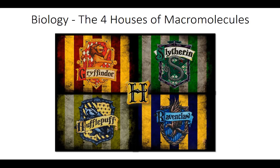Hey gang, it's Professor Roth and welcome to another episode of Biology One. Today we're going to be talking about the macromolecules of life — the four organic molecules. I tend to associate these with the four houses of Hogwarts: Gryffindor, Slytherin, Hufflepuff, and Ravenclaw. We'll have something very similar with the four types of macromolecules that we're going to study in class.